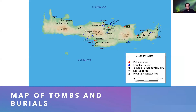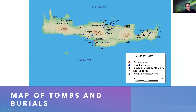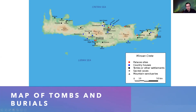Here is our map of tombs and burials in Minoan Crete — it's always good to come back and look at this. Today we are going to be looking at three major burial sites: mainly those around Knossos, Phaistos — in particular the Plains of Massara — and also those at Mochlos. These are three very important sites to remember. Gournia, which is next to Mochlos, is also important because it shares cemeteries with Mochlos.